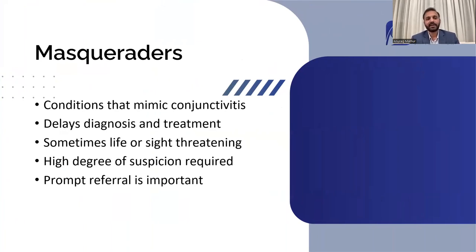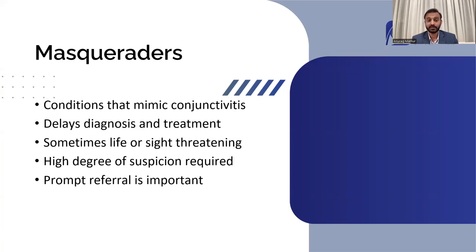Now we come to the final and very interesting part of the presentation: masqueraders. Masqueraders are disease entities that basically disguise as conjunctivitis but are not conjunctivitis. They are wrongly diagnosed and treated as conjunctivitis, which delays their proper diagnosis and treatment, and in some cases can be vision-threatening as well as sight-threatening. How to diagnose masqueraders? You need to have a very high degree of suspicion and always rethink why a patient has an atypical presentation.